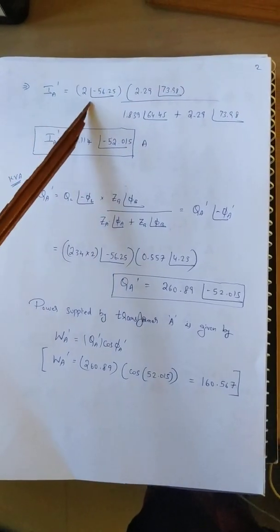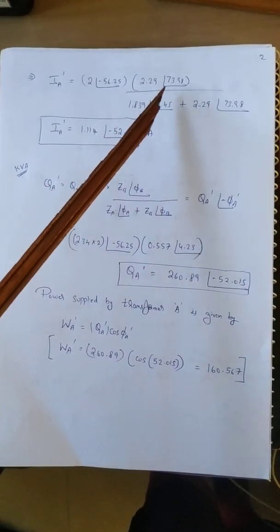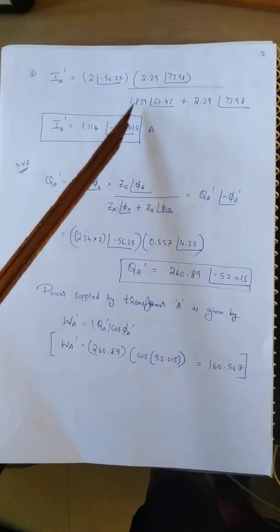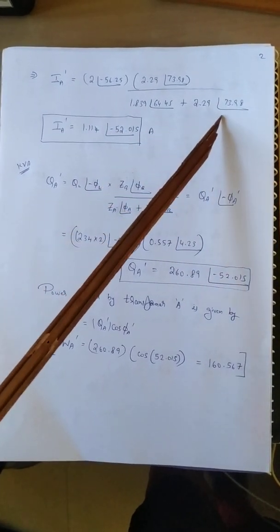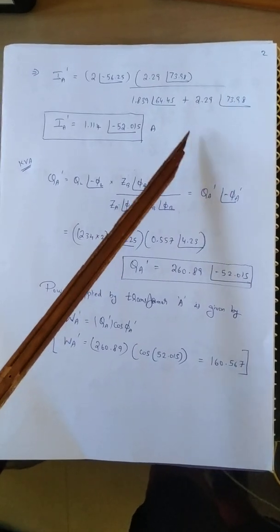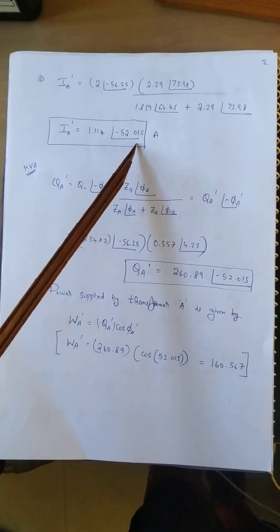I'A is given by 2 at an angle minus 56.25 multiplied by 2.29 at an angle 73.98, divided by 1.83 at an angle 64.4 plus 2.29 at an angle 73.98. After simplification we get 1.11 at an angle minus 52.015 amperes.